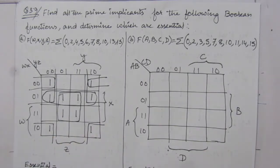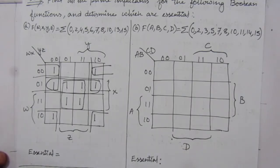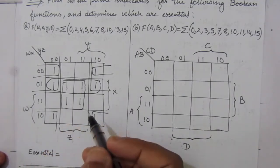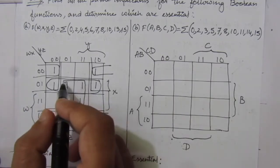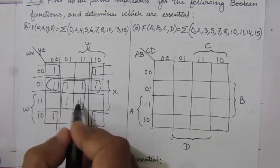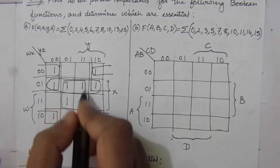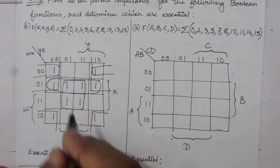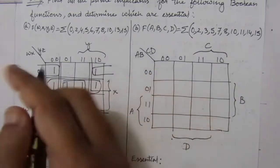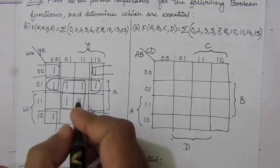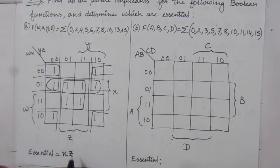Now we have to find out the essential prime implicants. For finding essential prime implicants, we have to see which values or ones are covered by only one prime implicant. We can see that this one and this one are in only one prime implicant — not covered by any other. So this whole term will be one essential prime implicant. For this group, we have x from the second and third rows, and z from the second and third columns, giving us xz.